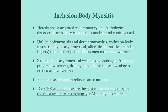All three myositis types share no ocular involvement - when you see ocular muscle weakness, think myasthenia gravis or Lambert-Eaton myasthenic syndrome, both nerve disorders, not muscle disorders. On physical exam, inclusion body myositis can show decreased tendon reflexes. CPK and aldolase are the best initial diagnostic step, and biopsy is the most accurate test. In between, you may get an EMG - because IBM is asymmetric, some muscles may be affected and others not, so the EMG helps identify which muscle to biopsy.